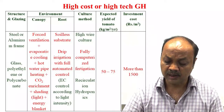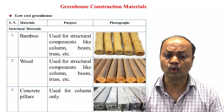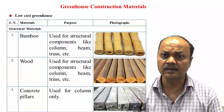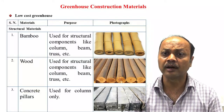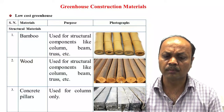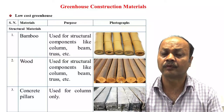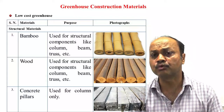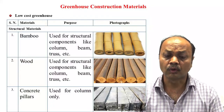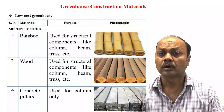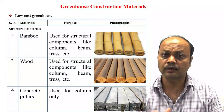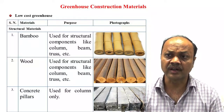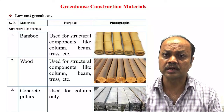For low cost greenhouse, structural materials normally used include bamboo, which is very abundant in Jharkhand, and can be used for column, beam, or truss parts. Wood serves the same purpose. In some places, people are using concrete pillars also. Commercially, wood and bamboo are grown, and the Government of India gives a lot of emphasis on promoting bamboo cultivation because it improves the income of farmers.